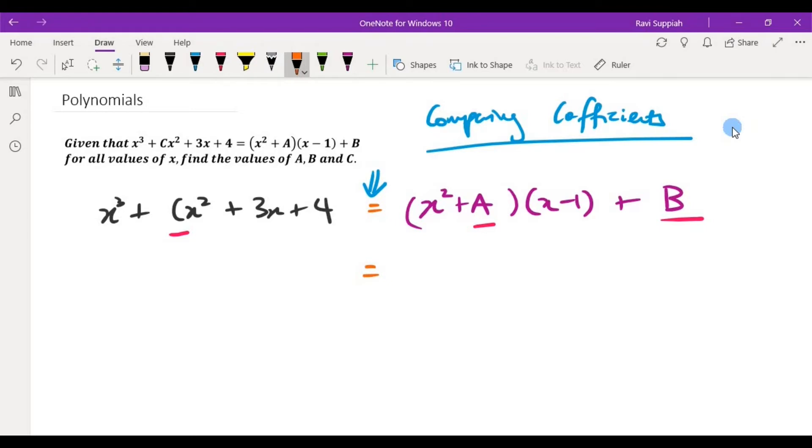So over here I'm going to do the rainbow expansion method. I have x squared times x is x cubed. x squared into minus 1 is negative x squared, and here will be positive ax and negative a, and here I have plus b.